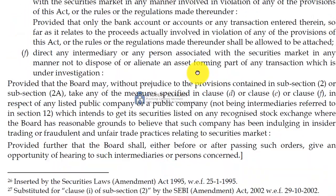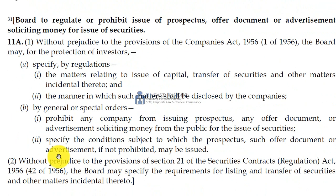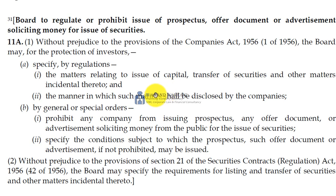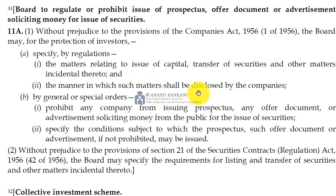Then Section 11A is again a very important section as far as corporate funding is concerned, because it says the power to regulate or prohibit issue of prospectus, offer document and advertisement soliciting money for the issue of securities. Here it's given that without prejudice to the provisions of the Companies Act, the board may for the protection of investors specify by regulations the matters relating to the issue of capital, transfer of securities and other matters incidental thereto. So above the Companies Act, the board — SEBI — has power over the issue of capital and transfer of securities.